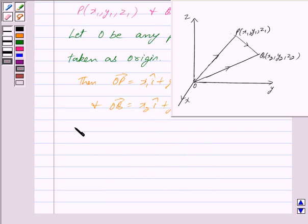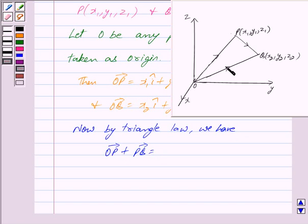Now by triangle law we have vector OP plus vector PQ equals vector OQ.